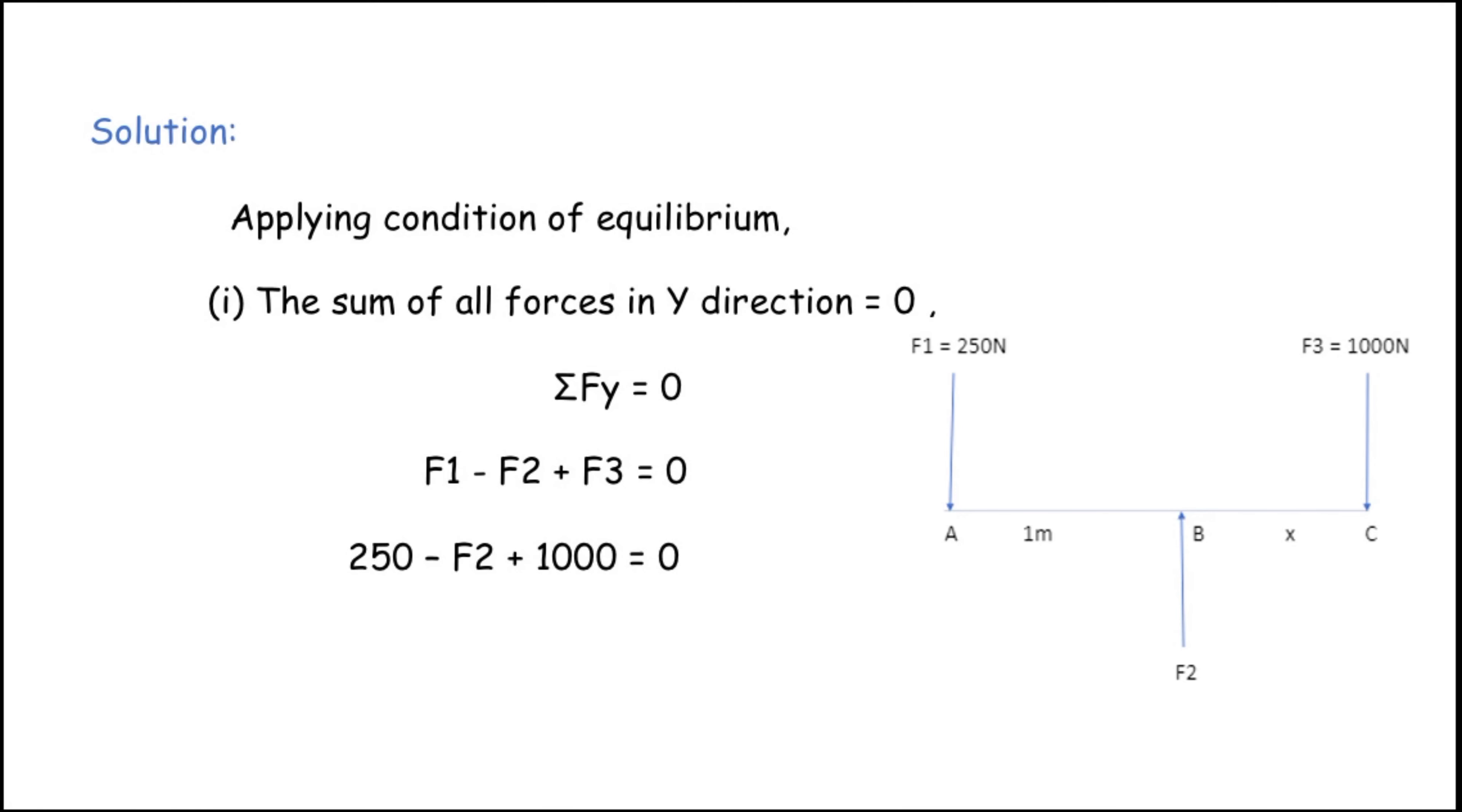The value of F1 and F3 is substituted. So, 250 minus F2 plus 1000 equals 0. So, minus F2 plus 1250, it was 1250 equals 0. Now, I am transferring the 1250 from left to right. It becomes a negative same sign. So, minus F2 equals minus 1250. The minus on both sides is cancelled. So, the value of F2 is 1250 Newton. We found the force F2 is 1250 Newton.